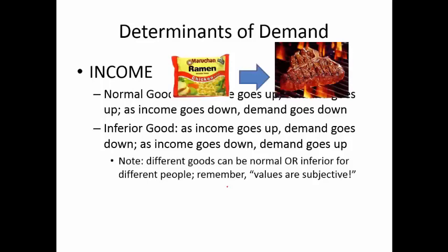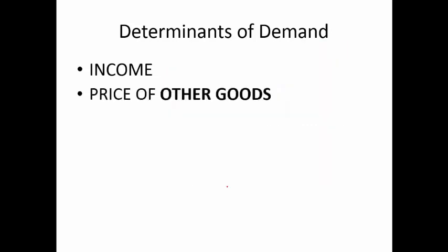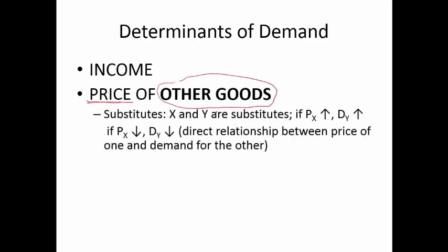Normal and inferior are just category labels — there's no value judgment implied. In economics, values are subjective; we're not trying to say anything about people's choices. The second determinant is the price of other goods — and the key word is 'other.' When the price of milk itself changed, demand didn't change, just quantity. But when the price of other goods changes, that can influence the level of demand. One category is substitutes: the price of X goes up, demand for Y goes up, because Y can satisfy the same wants as X.